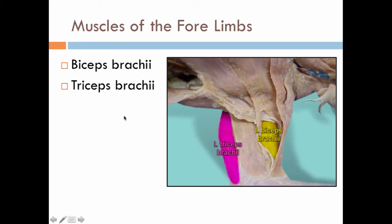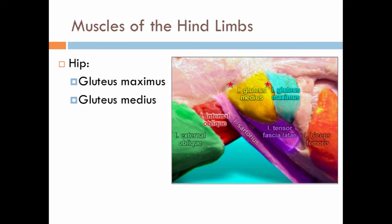Muscles of the forelimbs — the brachium. The biceps brachii and then the triceps brachii. Remember the biceps brachii functions to flex at the elbow, and the triceps brachii functions to extend at the elbow. 'Ceps' means head, so the triceps actually has three heads and the biceps has two. We're only seeing one head of the muscle here.